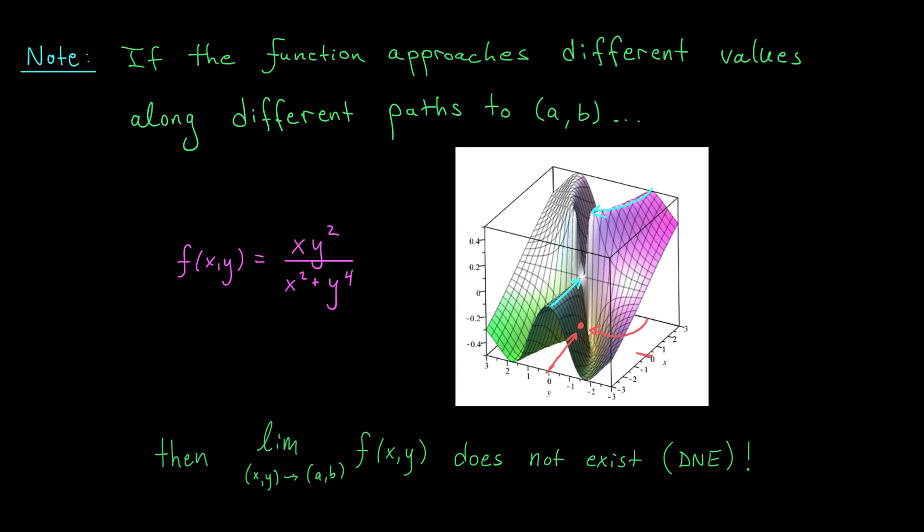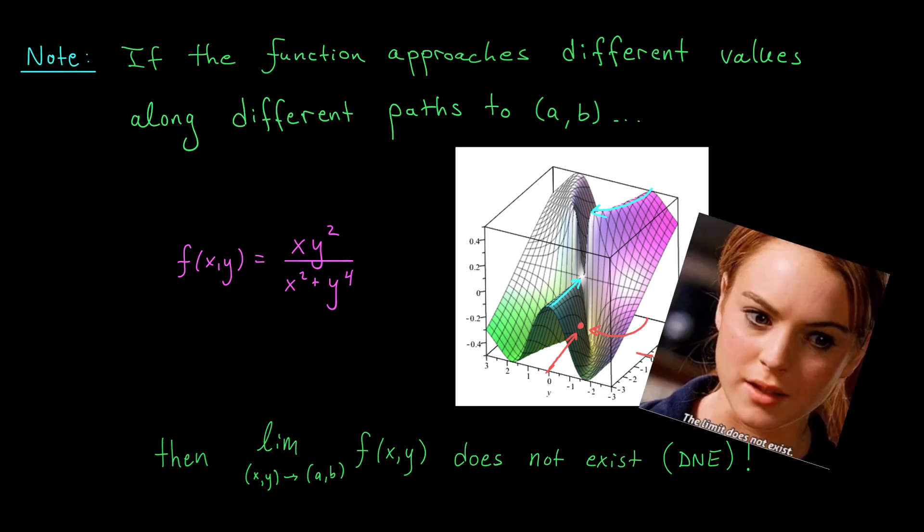Well, at this point, folks, we can stop. There's no need to check further paths. If we can find just two paths to (a,b) where the function is approaching different values, we simply say the limit does not exist.